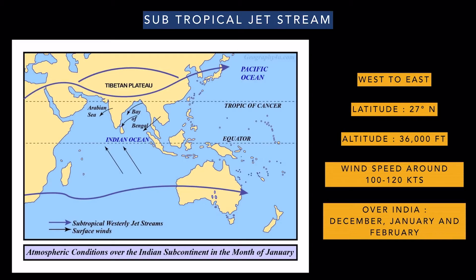So if we were flying from Delhi to Kolkata in the winter months, we would experience tailwinds because of this subtropical jet stream.